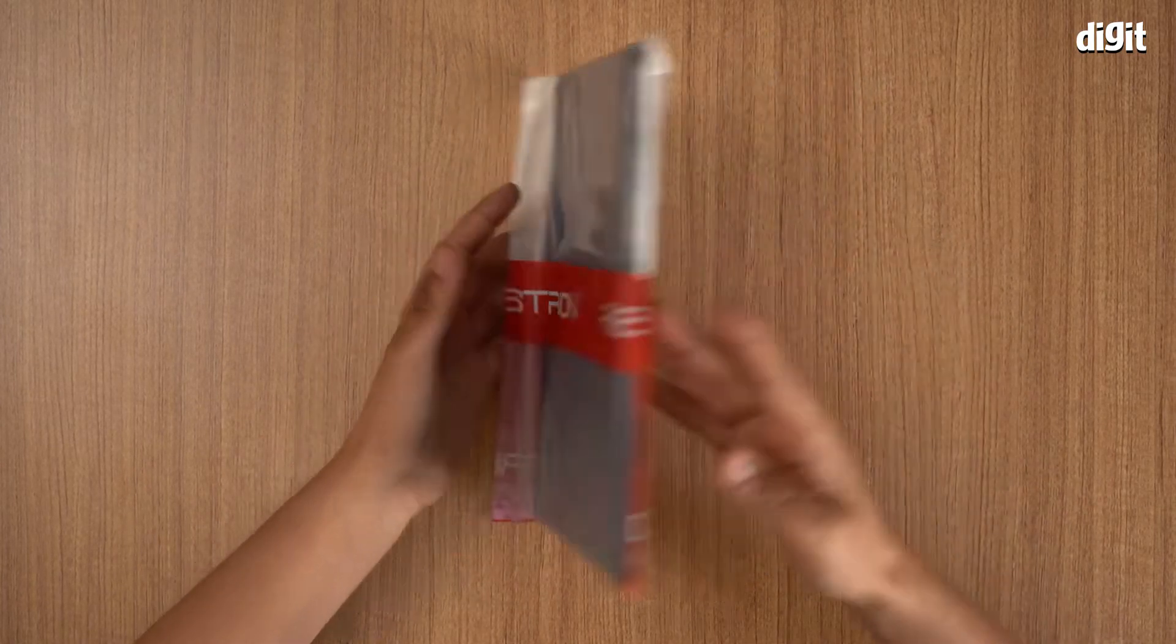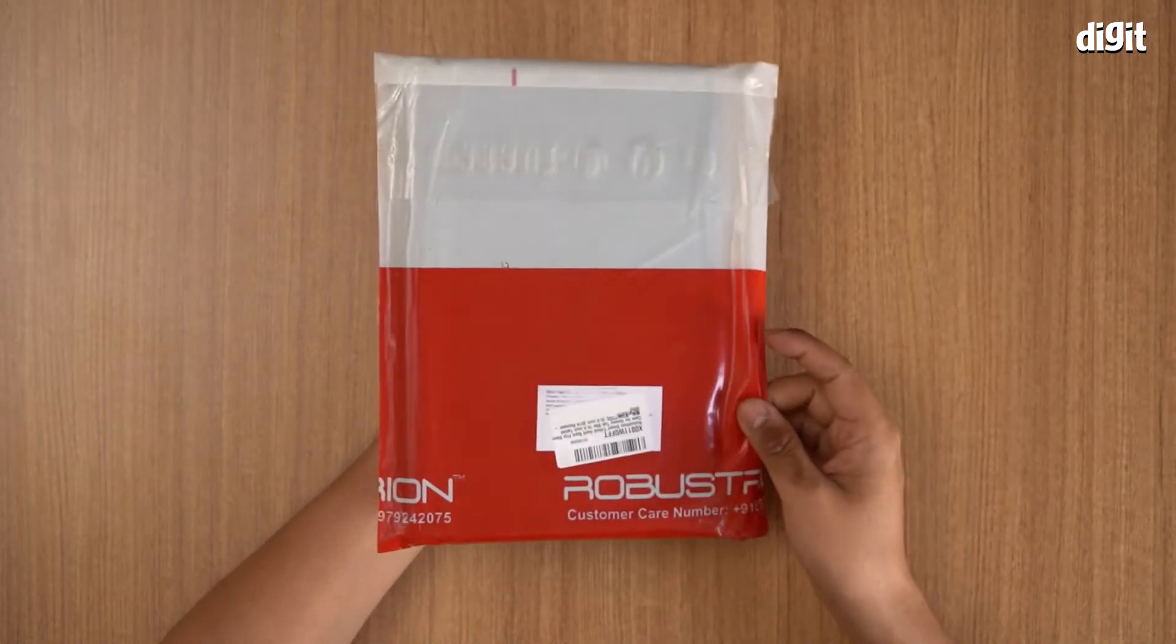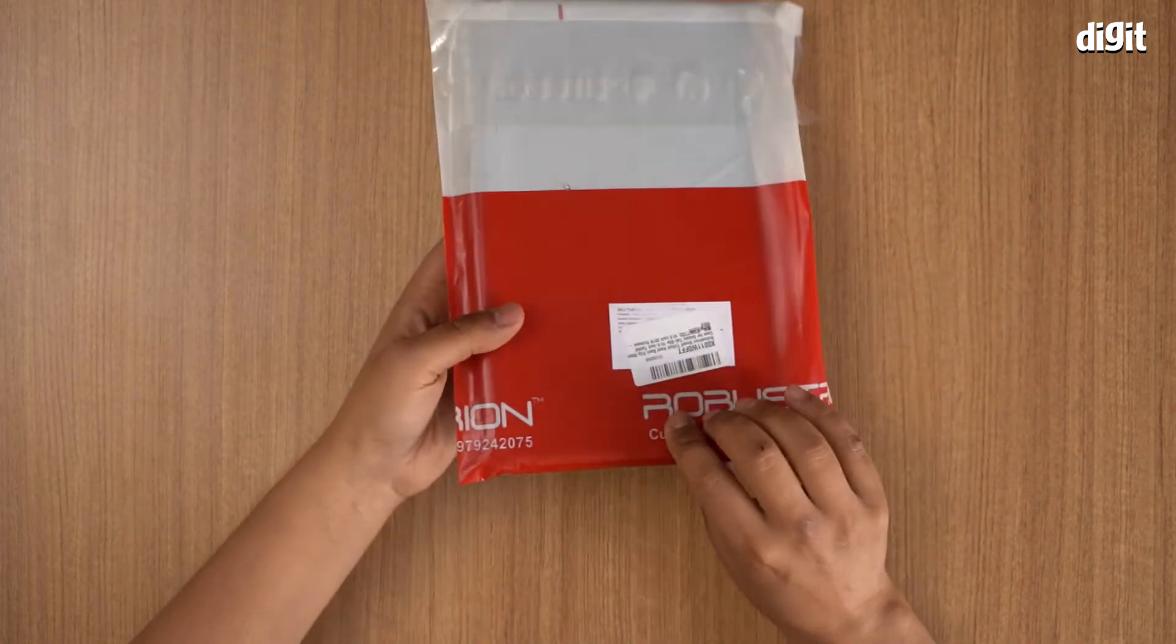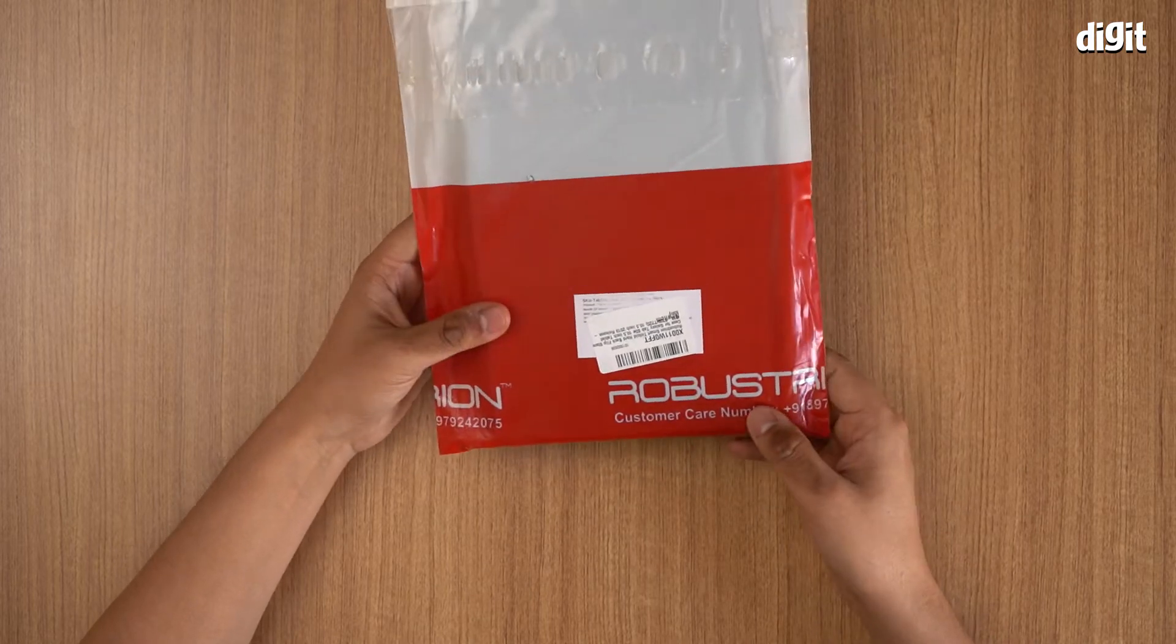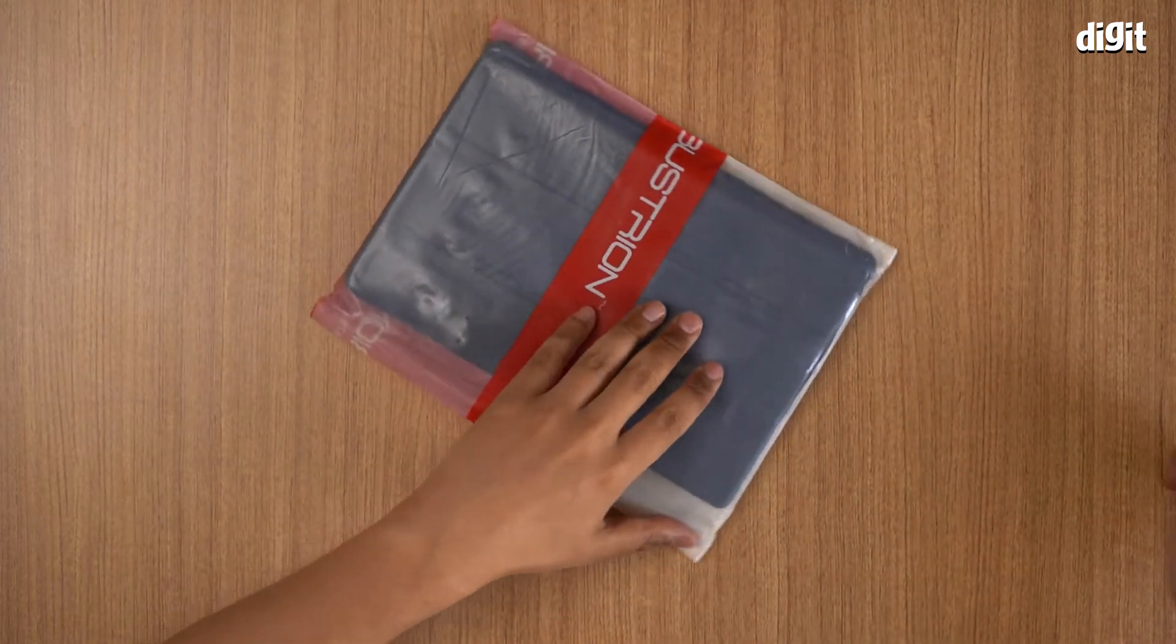The case is inside. There's a plastic wrap that comes with the Robustrion package. The customer care number is also given on here. Let's just go ahead and open it up.